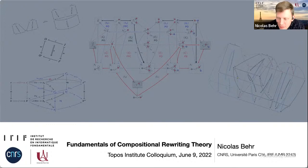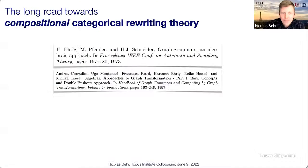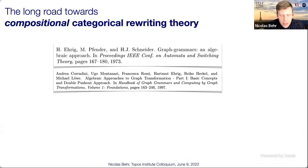Today I want to speak about compositional rewriting theory, which could be called applied category theory — very much located in this community, though perhaps with a very different style in the literature. This theory started in the 1970s with the work of Hartmut Ehrig, who found that you can formalize directed multigraph rewriting in a categorical fashion.